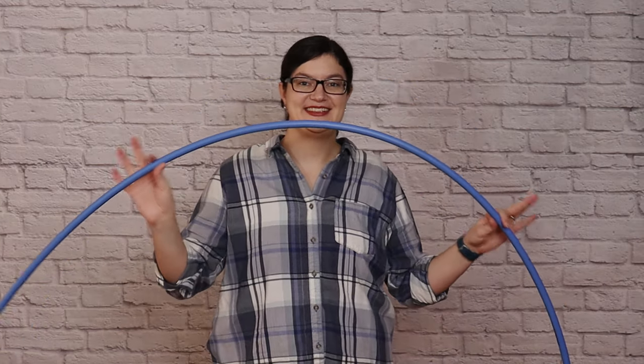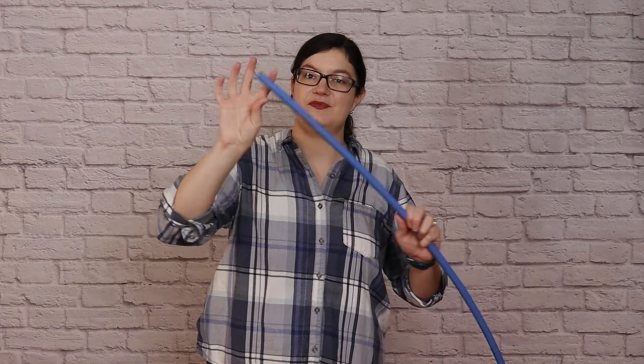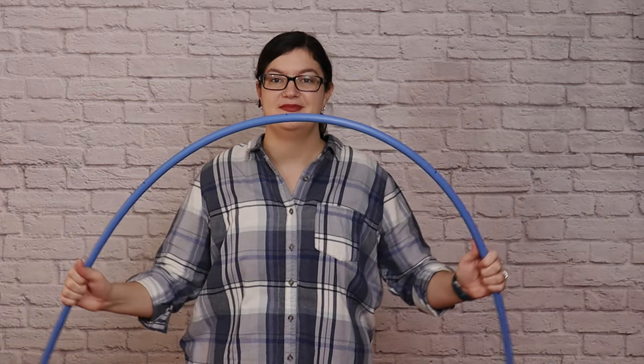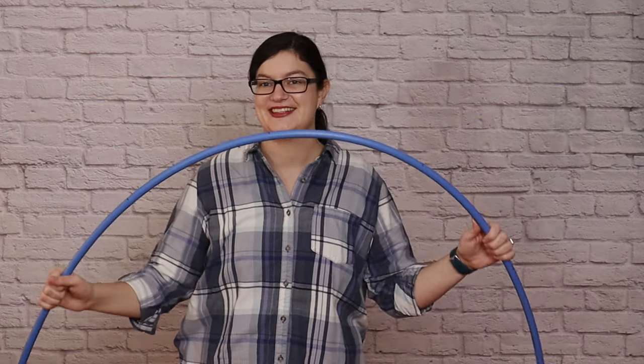And that is this 10 foot long section of half inch PEX piping. I chose PEX because it's much more flexible than PVC piping, and that's going to give us that beautiful curve we want at the top of our arch.